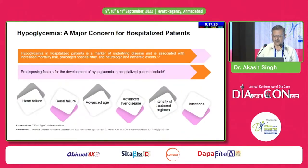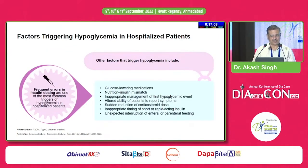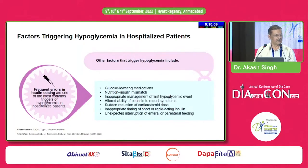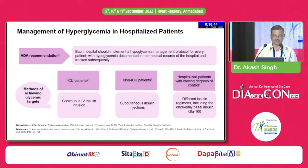Hypoglycemia is a major concern for hospitalized patients, especially in conditions like heart failure, renal failure, advanced liver disease, intense insulin treatment, and infections. In all these conditions patients have more liability to go into hypoglycemia and should be accordingly managed. Hypoglycemia is generally a result of dosing errors, nutritional-insulin mismatch, medications, deteriorating renal condition, or deteriorating general condition with poor intake. You have to look for these factors and modify your regimen accordingly.